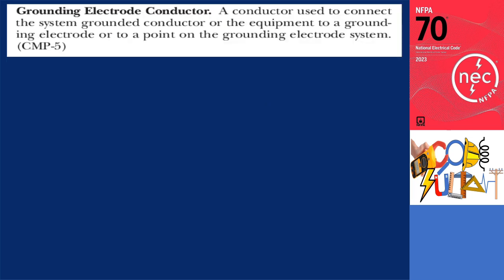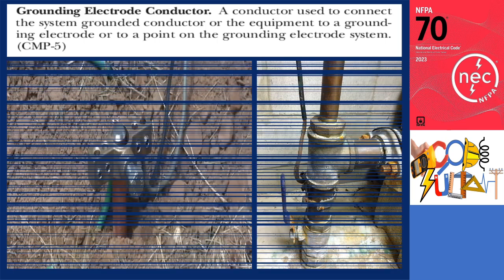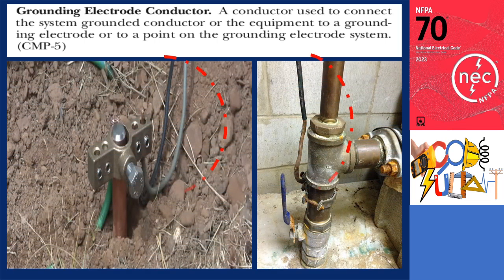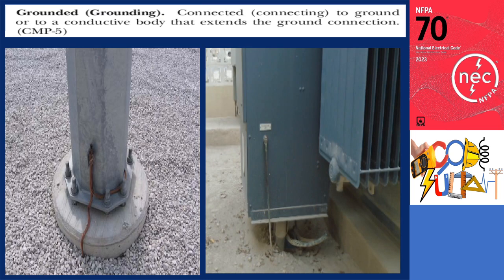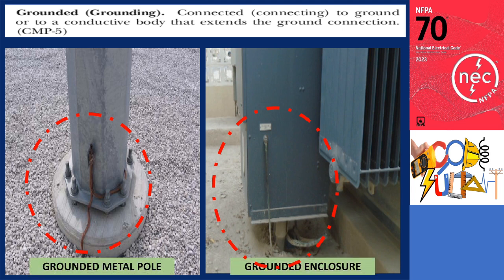A grounding electrode conductor is a conductor used to connect the system grounded conductor or the equipment to a grounding electrode or a point on the grounding electrode system. Grounded or grounding means connected to the ground or to a conductive body that extends the ground connection. Photos show an example of a body that extends the ground connection — the metal pole and the transformer enclosure are connected to the Earth either directly or by the termination to another grounding electrode.